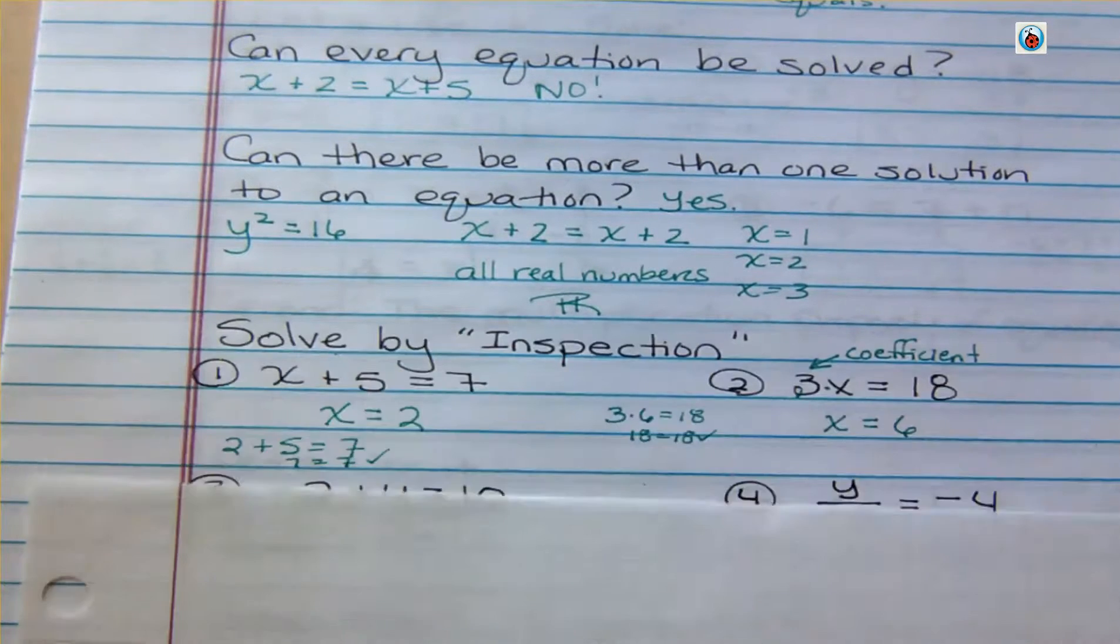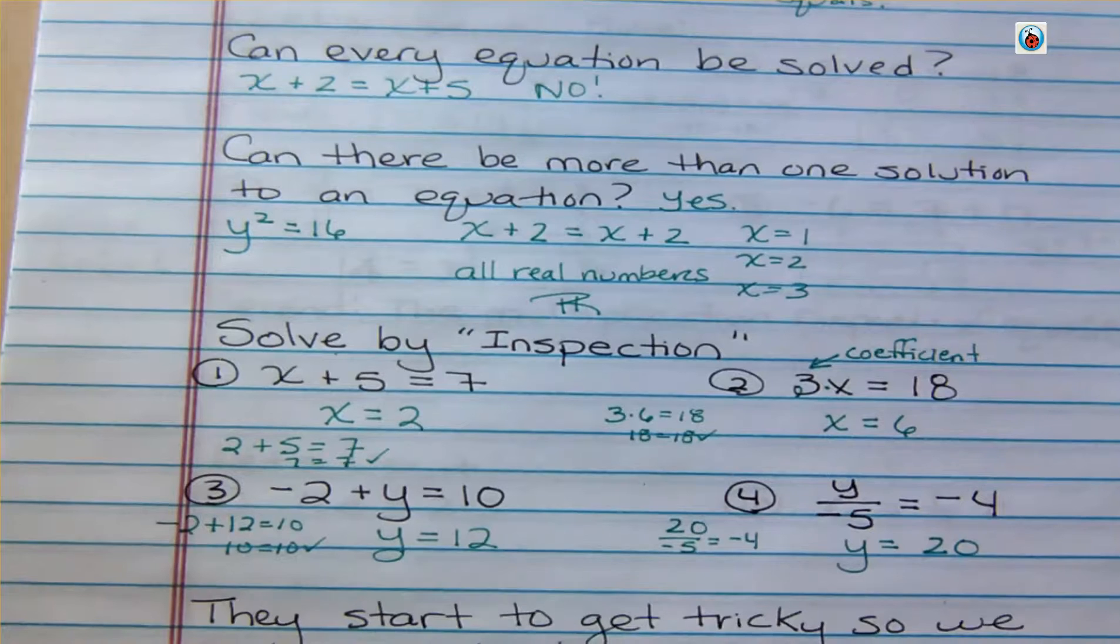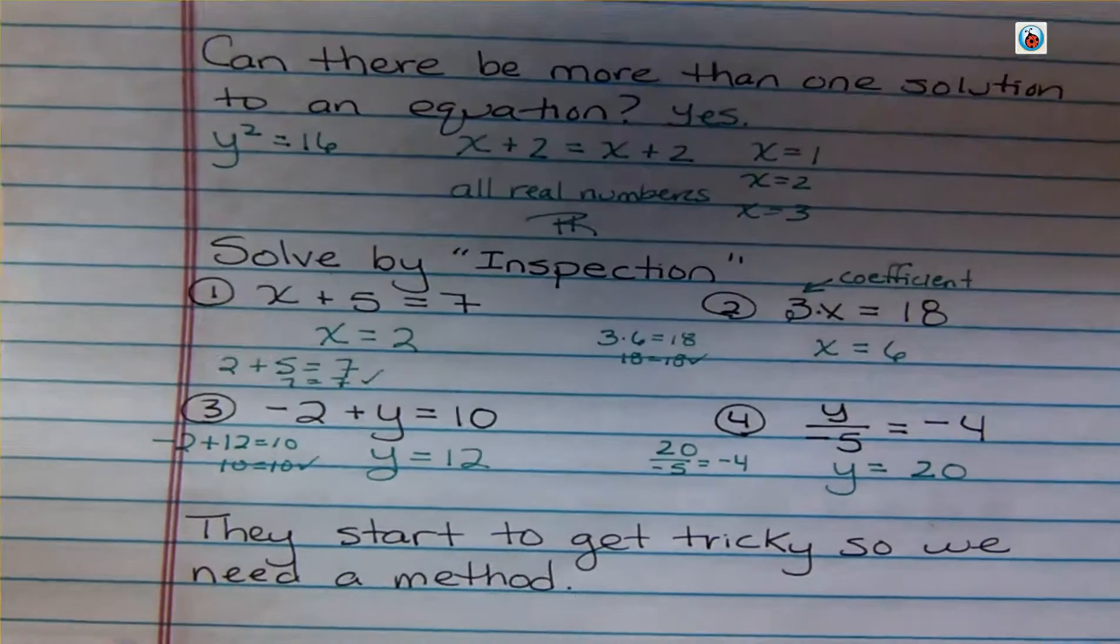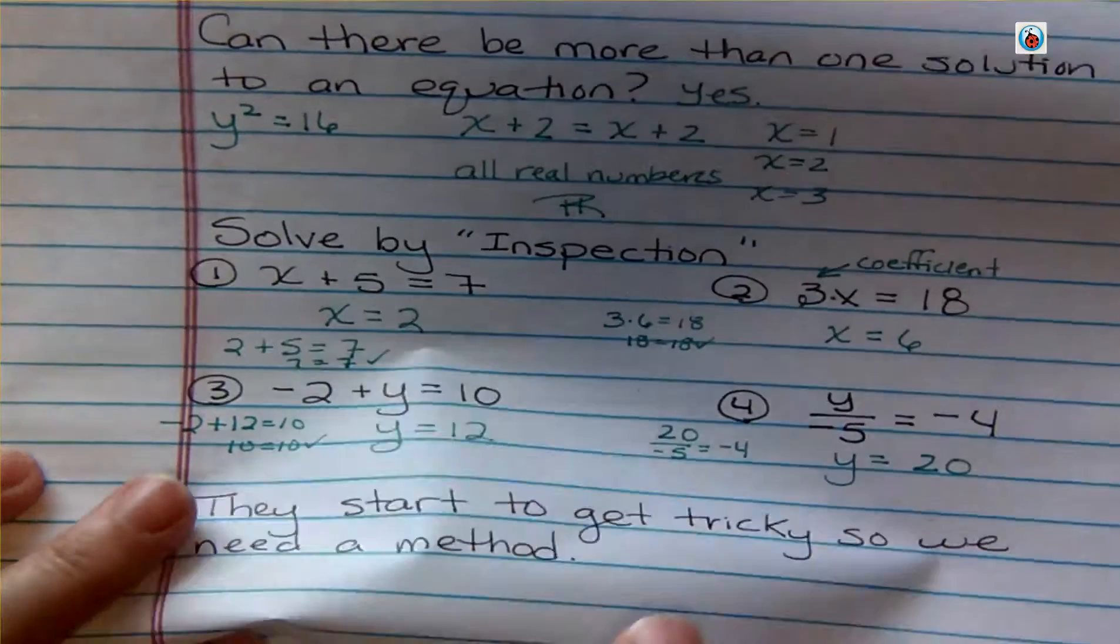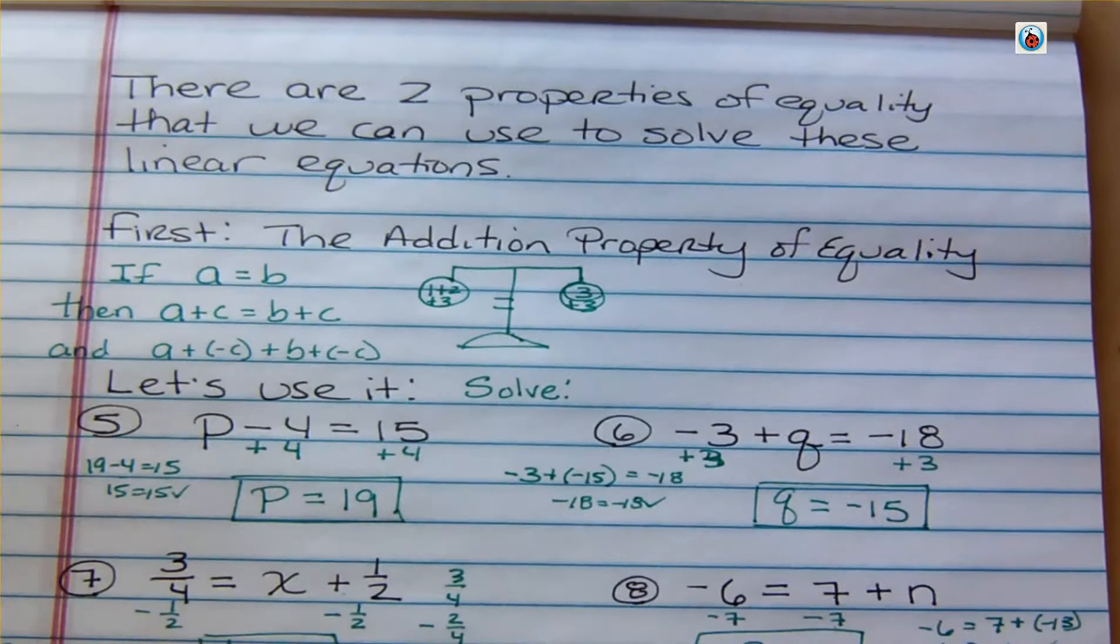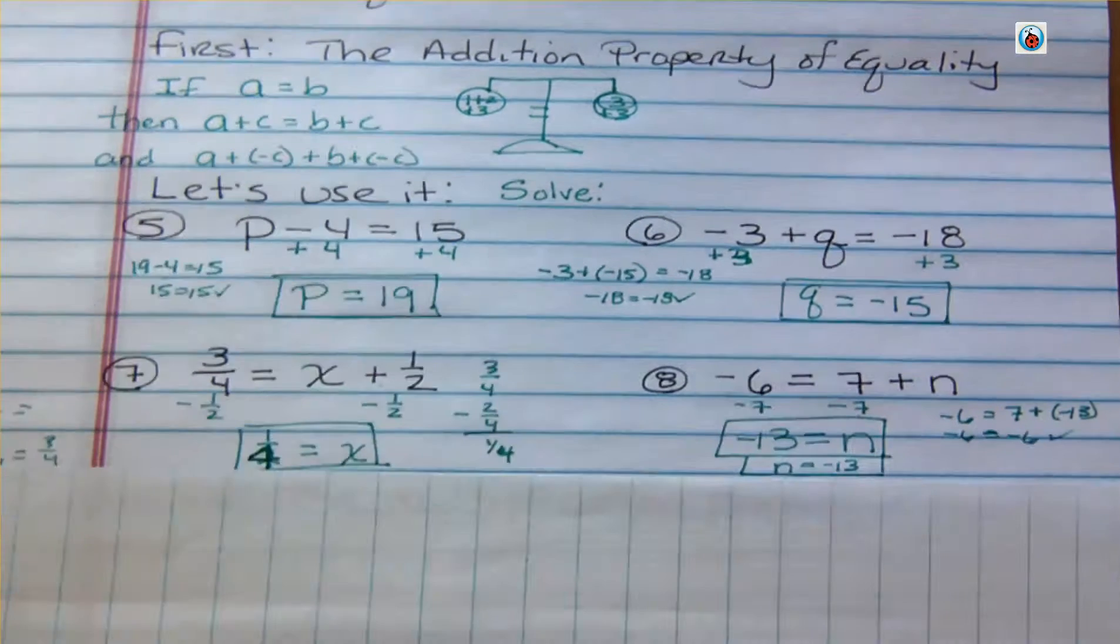We looked at solving by inspection, that is just looking at an equation and knowing what the answer is just by looking at it. And then we said we needed methods because the equations will start to get tricky, and you need a method in order to solve it. The method that we looked at first was the addition property of equality, and we solved several equations using that. And that brings us up to where we are now in this video.